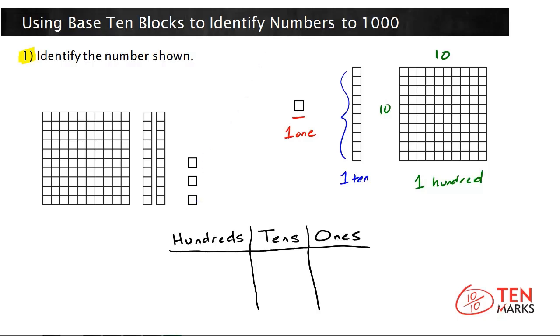Let's look at the ones first. I can see one, two, three ones cubes, which means the digit here is a three. Now, count the tens rods. There are one, two tens rods, so put the digit two in the tens place.